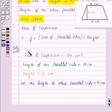Let the length of the other parallel side be x cm. Now we will substitute these values in the formula for area of trapezium. So we have 34 equals half times (10 plus x) times 4.